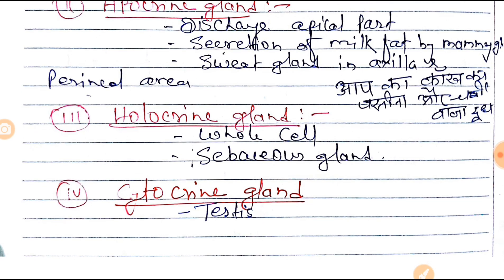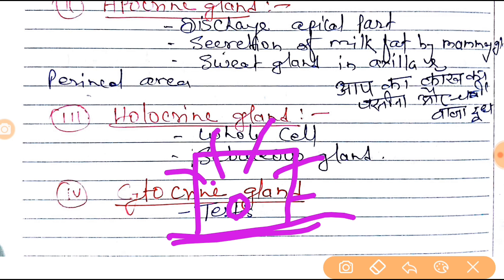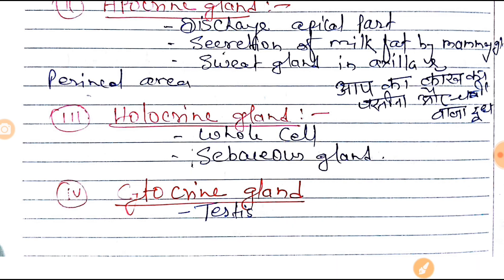Next is the holocrine gland. Holocrine means whole cell — the entire cell undergoes secretion. The example is the sebaceous gland, and you can remember it as 'sebaceous whole cell.'